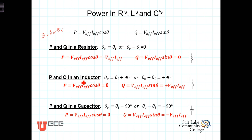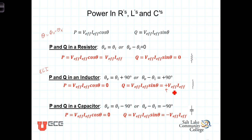For P and Q in an inductor: the voltage leads the current by 90 degrees — theta sub V equals theta sub I plus 90 degrees, so theta equals positive 90 degrees. P is proportional to cosine of 90 degrees, which is zero, confirming the average power in an inductor is zero. The sine of 90 degrees is positive one, so Q in an inductor equals positive V effective times I effective.